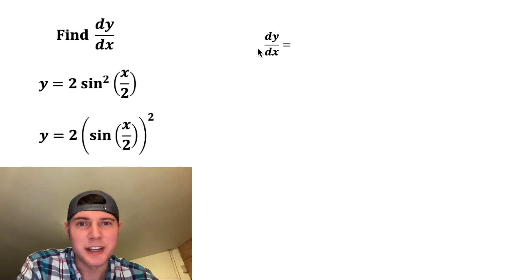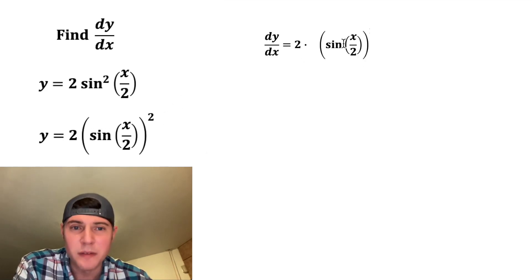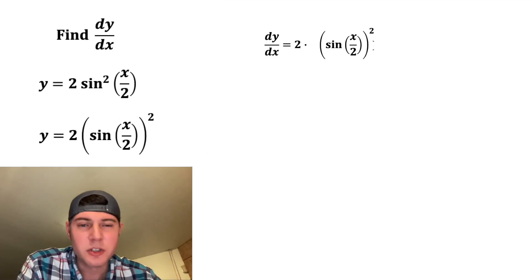So now let's take dy/dx. First, we have this constant 2 out front. I want to keep it out front. So our whole derivative is just going to be multiplied by 2. Next, we're going to leave this sine of x over 2 alone and we're going to take the derivative around it. This 2 is going to be brought to the front and then we're going to subtract 1 from it. And then because of the chain rule, we're going to multiply all this by the derivative of the inside here.